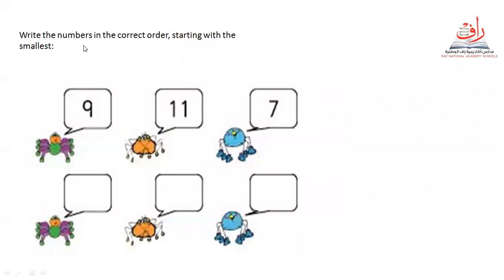That was for last week. Today we are going to continue with our numbers. Write the numbers in the correct order, starting with the smallest. Smallest from small — smallest. Good job! Let's find which number is the smallest: number nine, eleven, or seven?